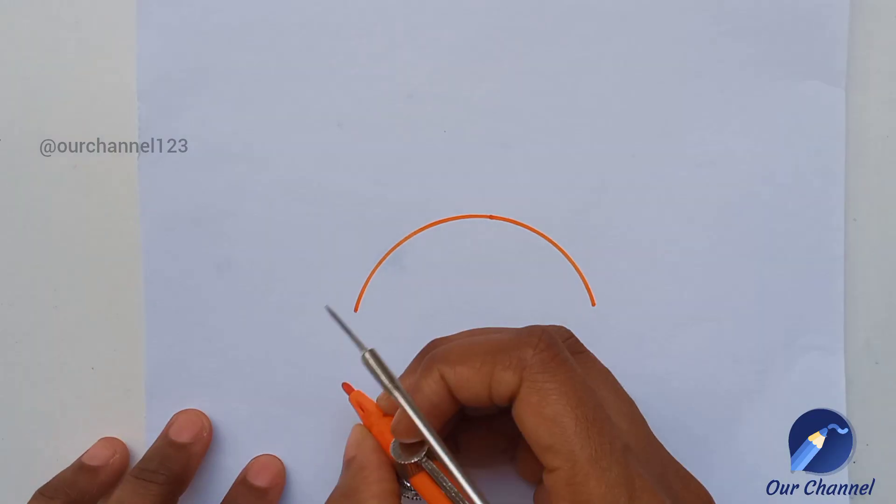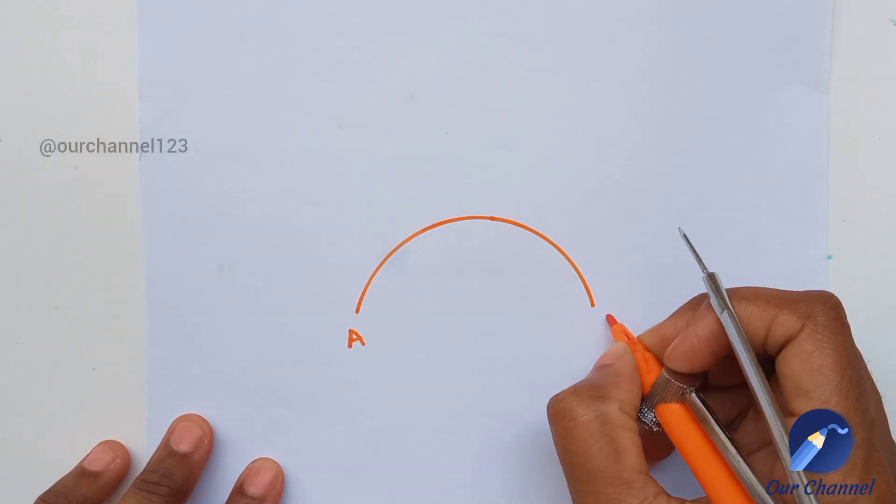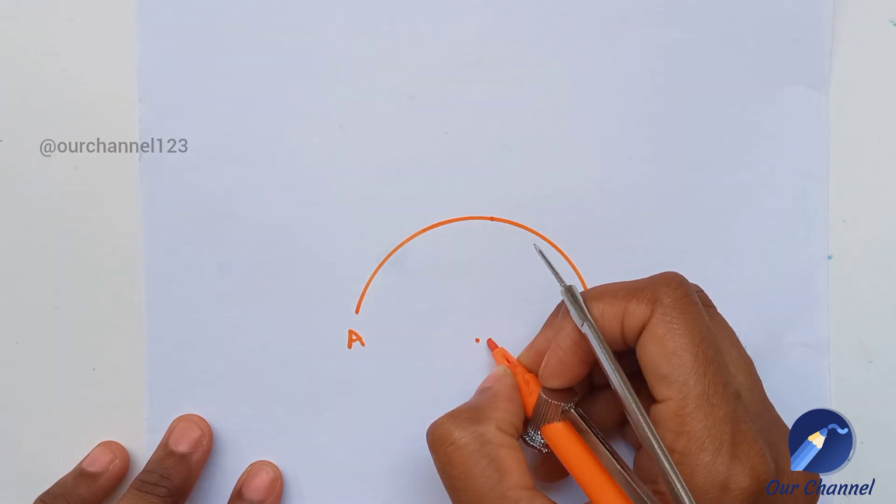Bisecting means dividing something into two equal parts. This is the given arc AB.